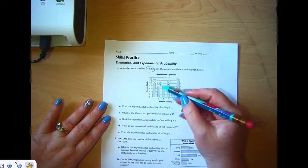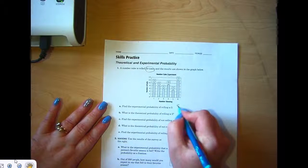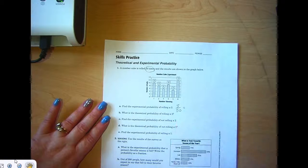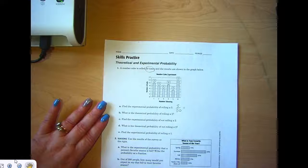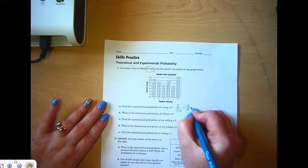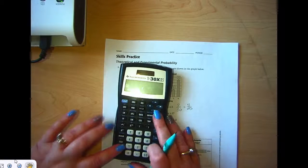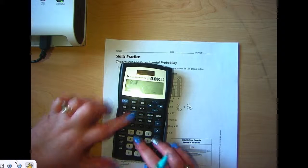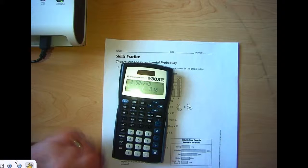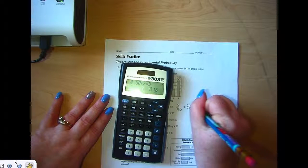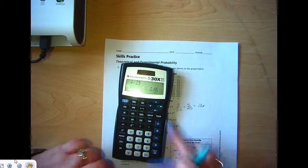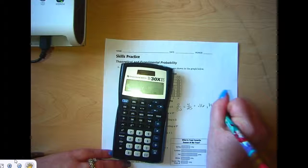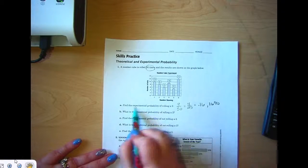Find the experimental probability of rolling a 2. Well, how many times did we roll a 2? We rolled a 2 eight times out of 50, and that simplifies to 4/25. So you could report it like that, or you can report it as a percent or a decimal: 8/50 equals 16 hundredths or 16 percent. That's the experimental probability when you run the experiment—you use that data.